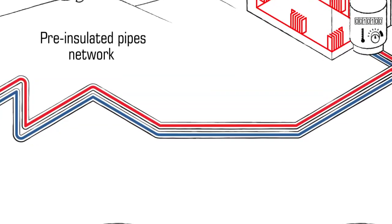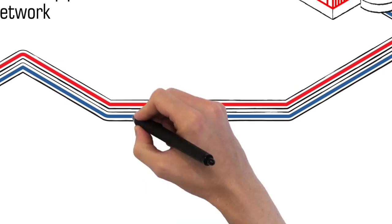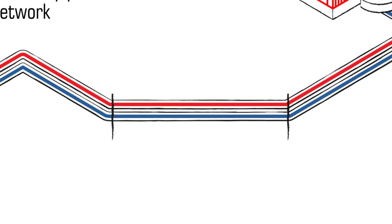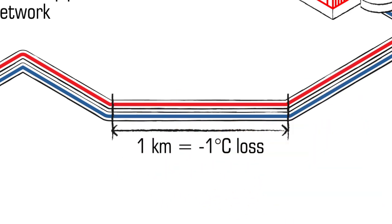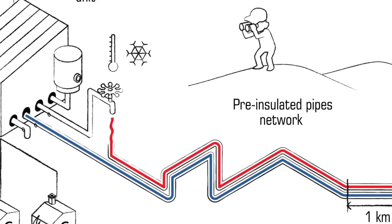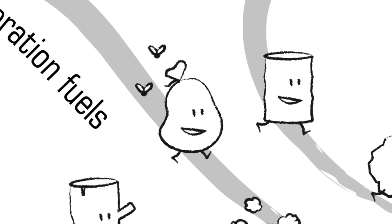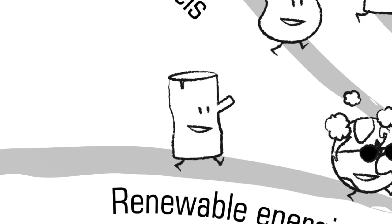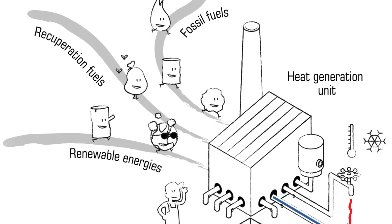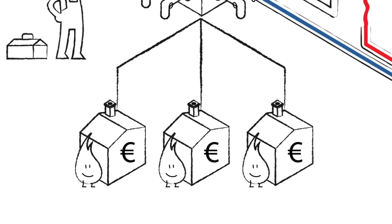Ecological advantages: losses in energy are very low, less than 1 degree Celsius per kilometre. In addition, the network is specifically adapted for the use of alternative energies, such as those generated from recuperation and renewable energies. Incineration of garbage and burning of wood, for instance, are of course easier to set up for a central boiler room than several small individual or collective types of equipment.